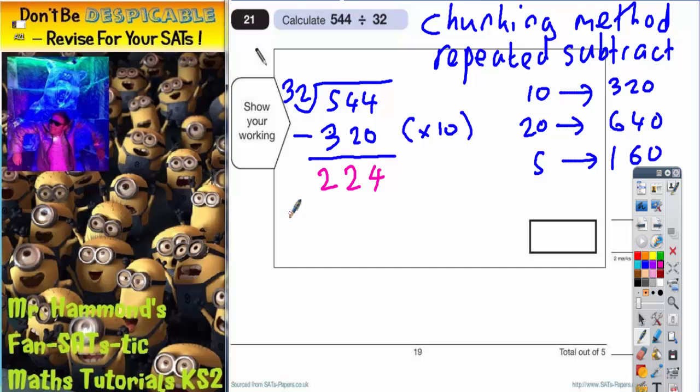So now I've got to think, well, what can I subtract from 224? How many chunks of 32 can I subtract this time? Well, I've only got 224 left, so 10 chunks is going to be too much because 320 is bigger than this. So I can't do 10 chunks, 20 chunks is definitely too much, but 5 chunks I can do.